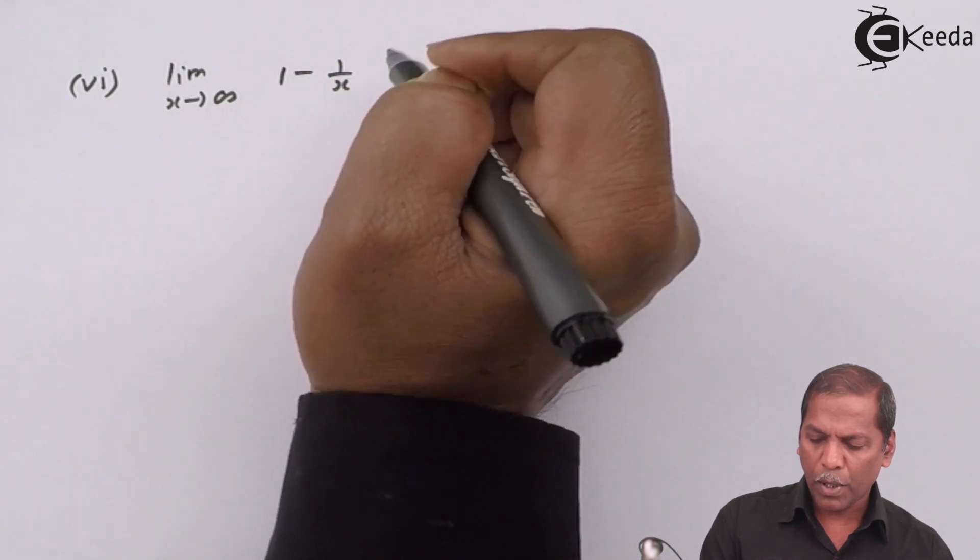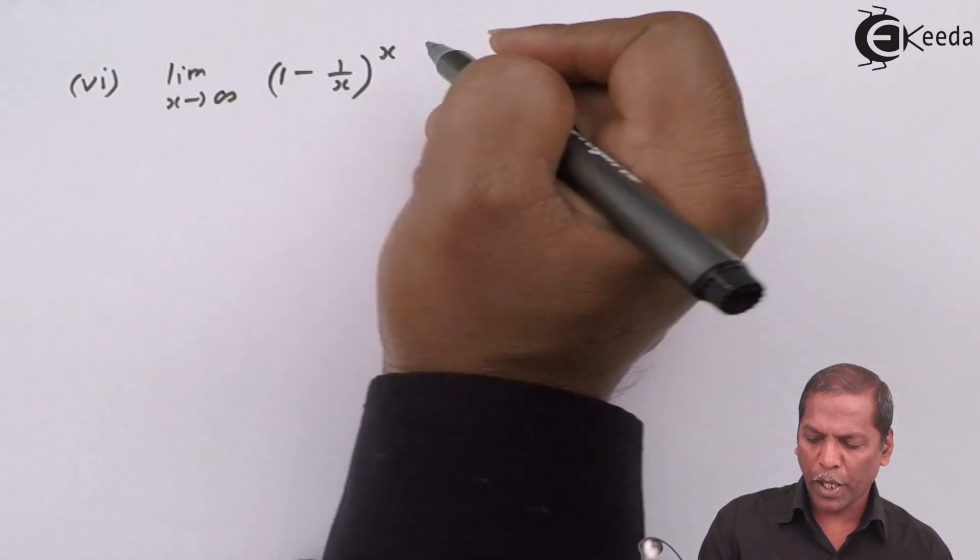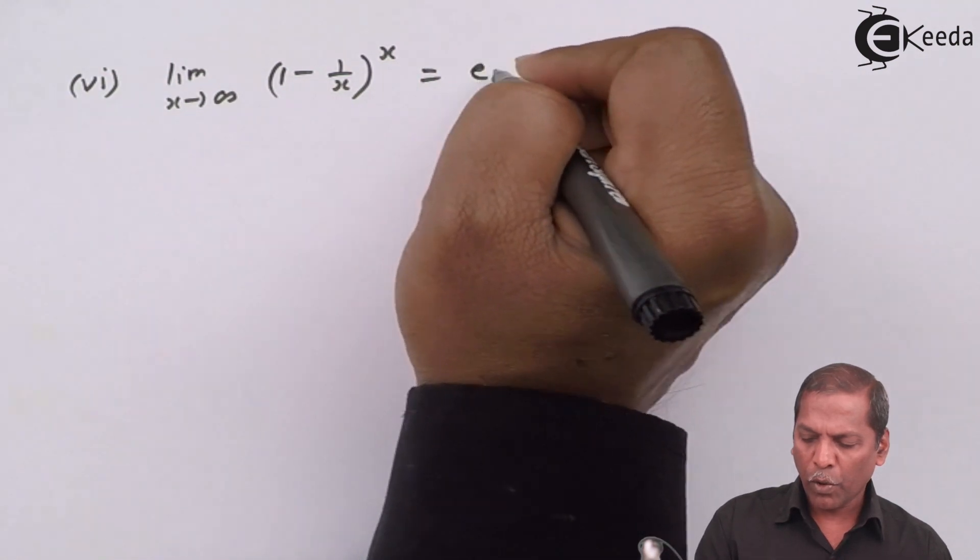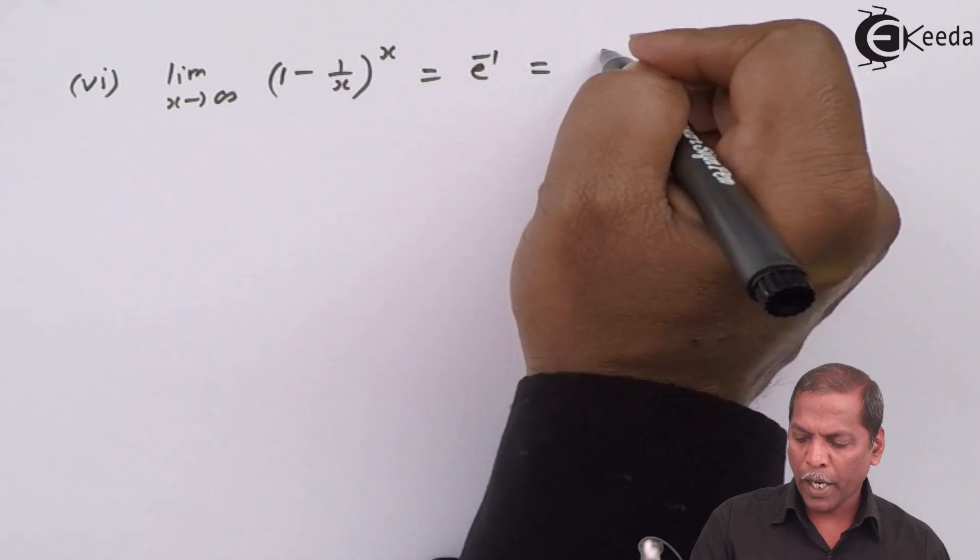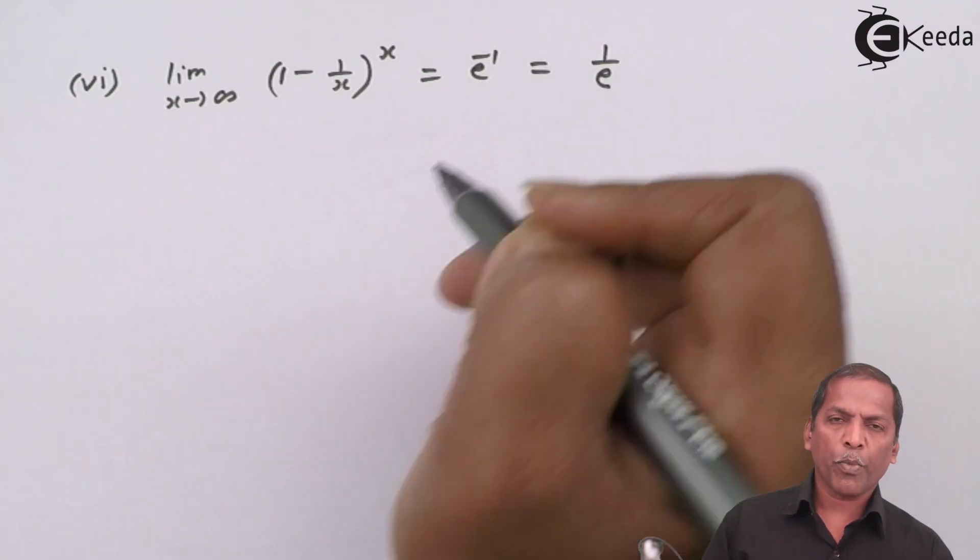Sixth formula is limit x tends to infinity, 1 minus 1 upon x raised to x, is equal to e raised to minus 1, and that can be written as 1 upon e.